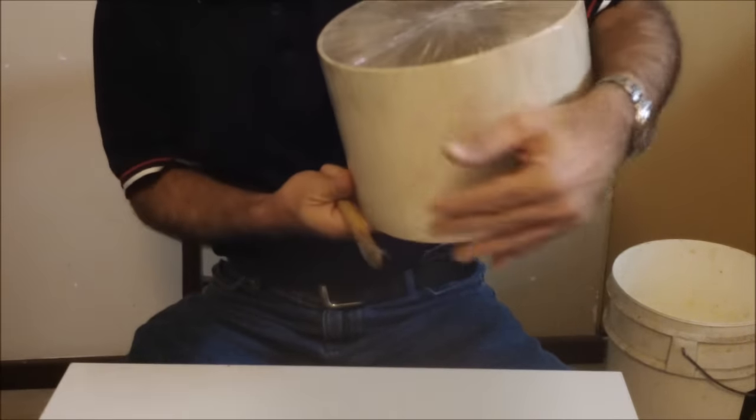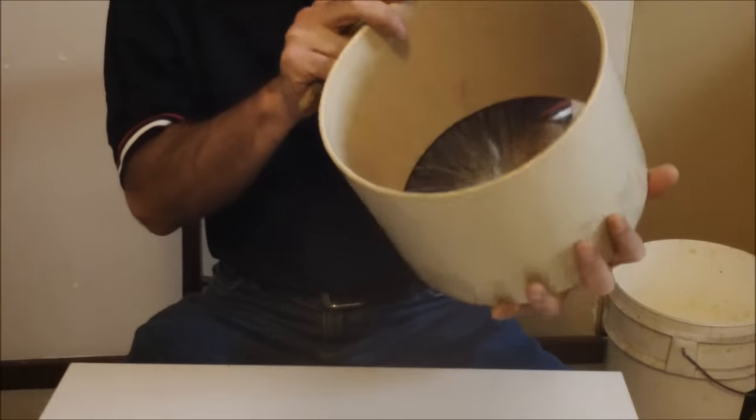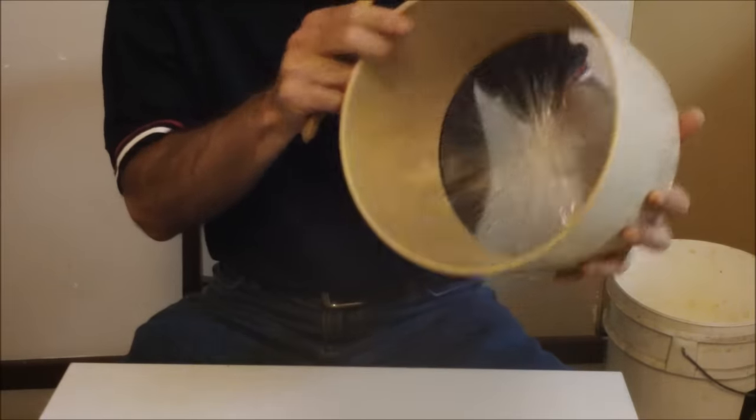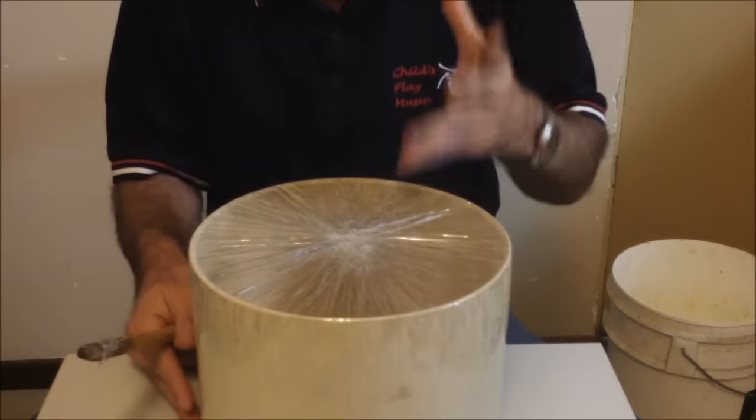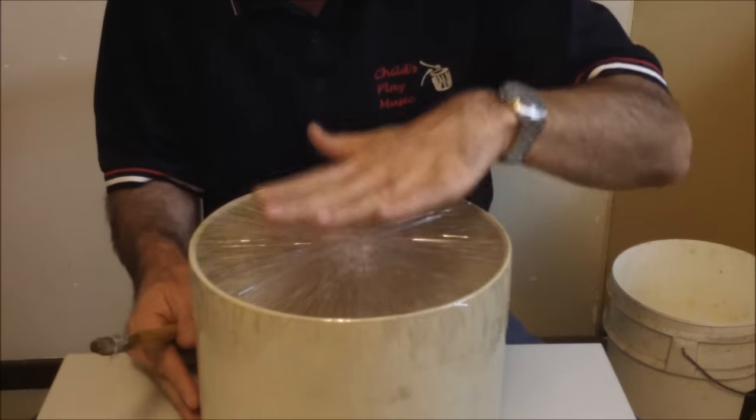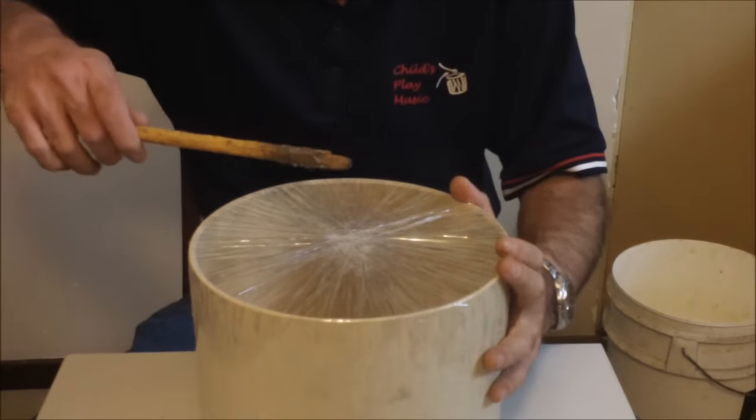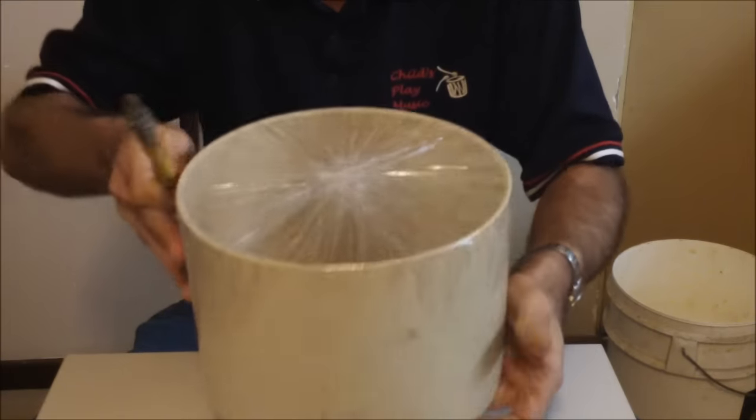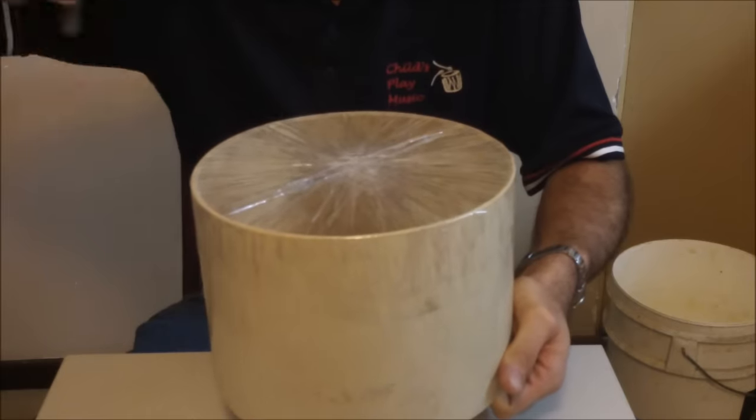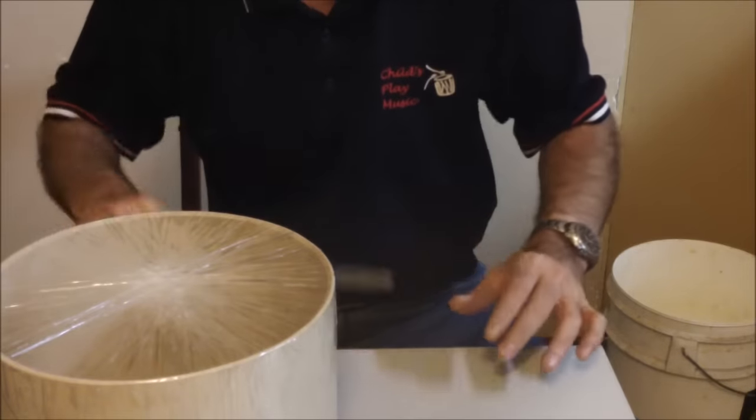One thing about this sort of drum is it's important that the bottom end isn't covered. If you put it down on a flat surface, the air that's trapped inside stops the drum skin from vibrating, and it's a very different sound. That's true for most drums.